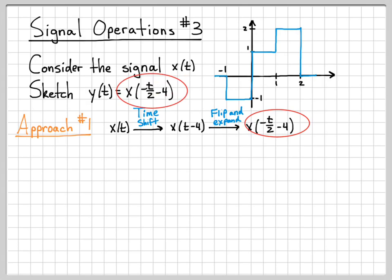So I've done a combined flip and expand. This is what I want to get to. These two operations—a time shift of 4 units to the right followed by a flip on the time axis and an expansion by a factor of 2—give me the signal I'm looking for. Let's go ahead and do that.